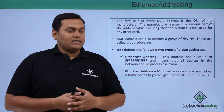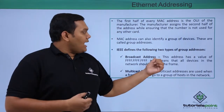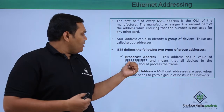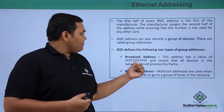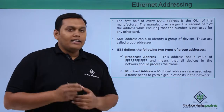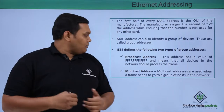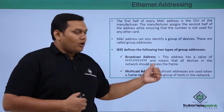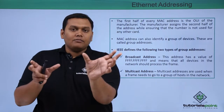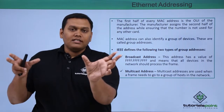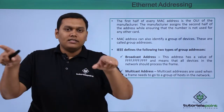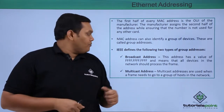A broadcast address has a value of FF.FF.FF.FF.FF.FF and means that all devices in the network should process the frame. So this broadcast address is used for processing the frame to all hosts in the same network.